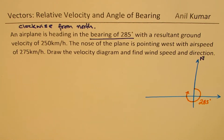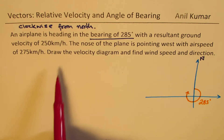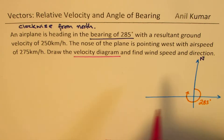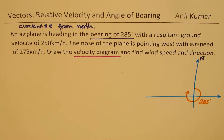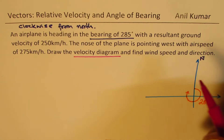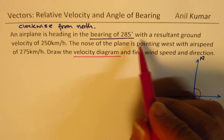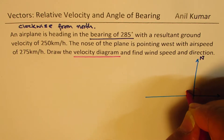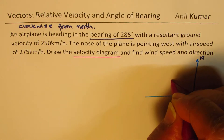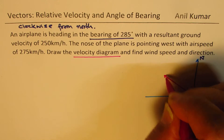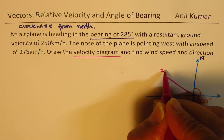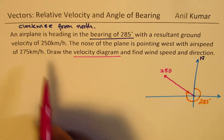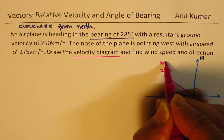When we are representing information in the form of a velocity diagram, we need two things: the angle and the magnitude. The magnitude here is 250. Let's take a scale and say this represents 250 kilometers per hour — that is our resultant velocity, vr.